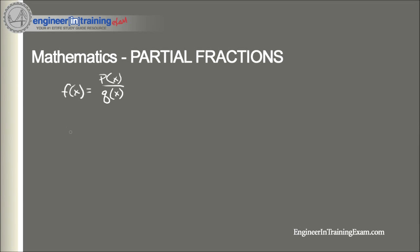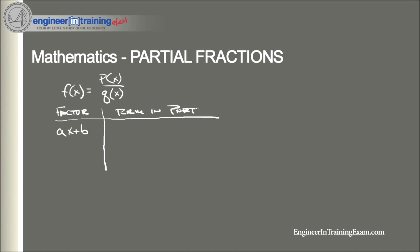I'll put this in a table format. This column is the factor in the denominator, and this column is our term in the partial fraction decomposition. So if we have a factor of ax + b, then the term in our partial fraction decomposition is going to be A / (ax + b).